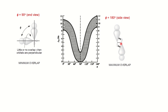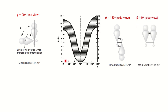At 180°, the coupling is the strongest — the J value ranges from approximately 9 to 12 Hz. Similarly, at 0° dihedral angle, the orbital overlap is also maximum, so the J value is maximum. This is why the J value is minimum at 90° and maximum at both 0° and 180°.